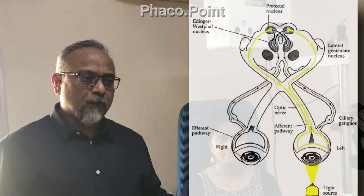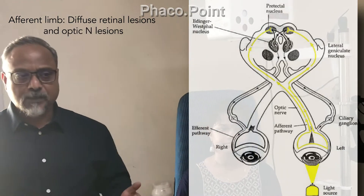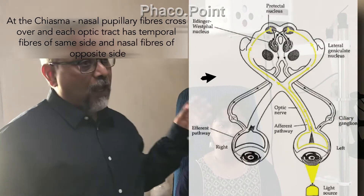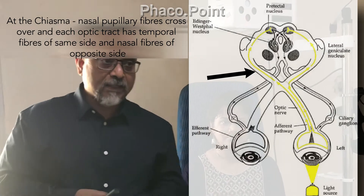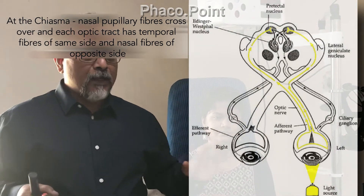When the right direct light reflex is brisk and consensual is also brisk, whereas on the left side the direct and consensual are both sluggish, this indicates the patient has a left optic nerve pathology or a left afferent pupillary defect. The afferent limb covers diseases of the retina and diseases of the optic nerve up to the chiasma. Beyond the chiasma, the nasal fibers of the pupillary pathway decussate, and the optic tract contains temporal fibers from the same eye and nasal fibers from the opposite eye, so pupillary reflexes cannot be completely relied upon in lesions beyond the optic nerve.